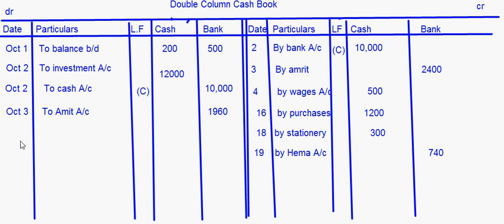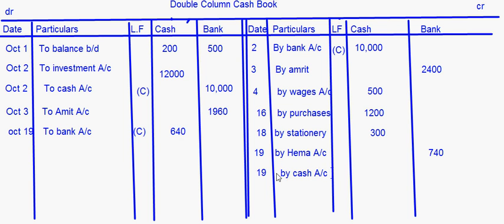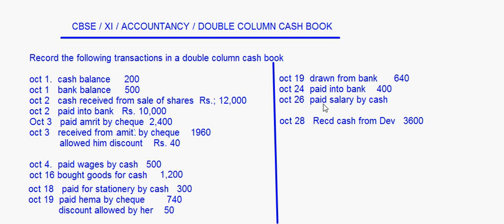October 19th: drawn from bank means withdrawing money from the bank — this is a contra entry. Cash is coming in, so on the receipt side write 'to bank account' in the cash column as 640. On the payment side, write 'by cash account' in the bank column as 640, because the bank balance is decreasing when you withdraw money.